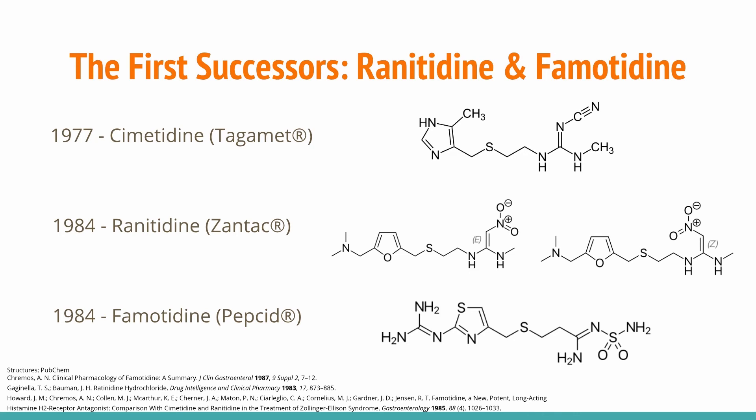Drug discoverers therefore sought to improve cimetidine's activity while reducing its significant adverse effects. Beginning just after cimetidine's release in 1977, researchers at Glaxo and Merck began to find alternatives. In 1984, the FDA approved two new H2 antagonist drugs. Ranitidine, developed by Glaxo and originally marketed as Zantac, substituted a furan ring in place of cimetidine's imidazole ring and added a nitro group to improve binding. These structural changes resulted in a four-fold increase in potency allowing for smaller dosages of just 150 mg twice daily, and also a tenfold reduction in P450 interactions, making the drug much more tenable long-term.